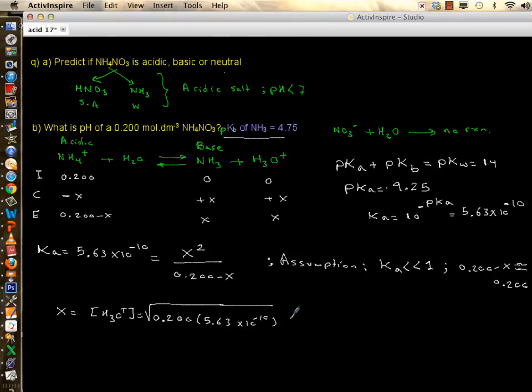If you do this, you will find it's 1.06 times 10 to minus 5, and pH is negative log of x, negative log of this number, and it will be in the neighborhood of 4 or 5. This is 4.97. Therefore, ammonium nitrate is acidic.